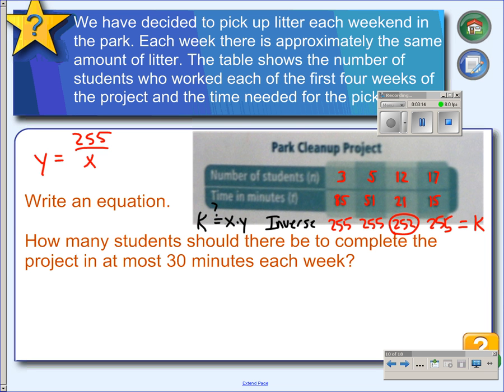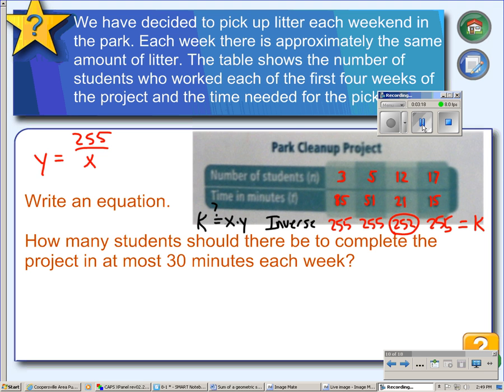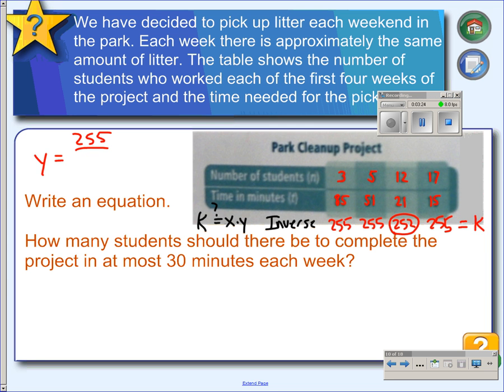Then the next question is, how many students should there be so that we can get this job done in 30 minutes? So, to get the job done in 30 minutes, I'm going to change my variables to match what it is in the table.